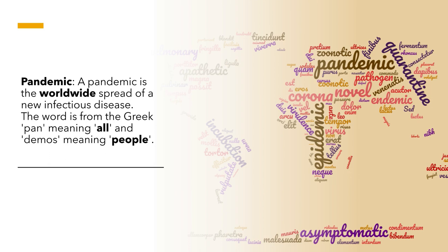The first and probably most obvious word to cover is pandemic. A pandemic means when a disease is spread across the world to every continent. Pan meaning 'all' in Greek, demos meaning 'people' — so it's affecting all people in all areas. Not literally every single individual, but it's a disease that's become very widespread, different to an epidemic which is affecting one particular area. A pandemic is affecting all areas, from the Greek word pan meaning 'all' — the worldwide spread of a new infectious disease.